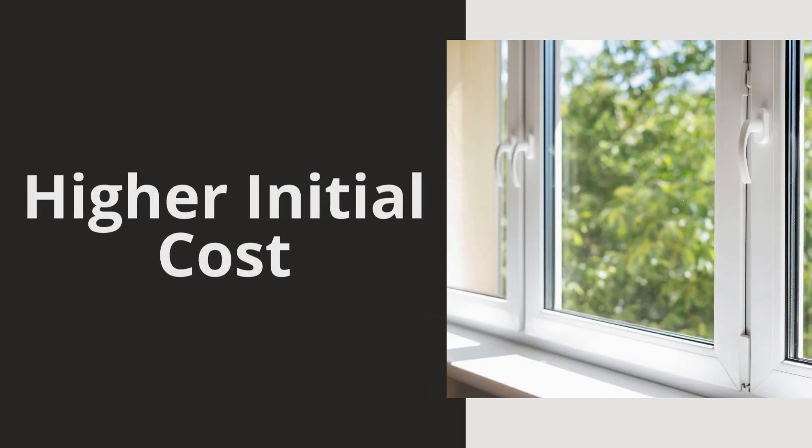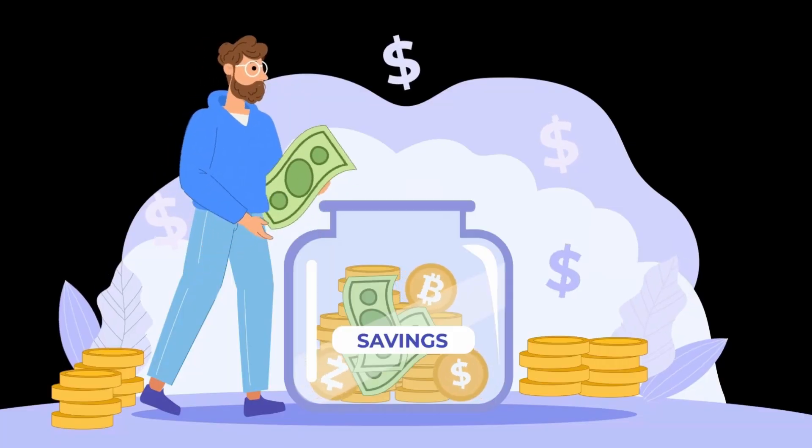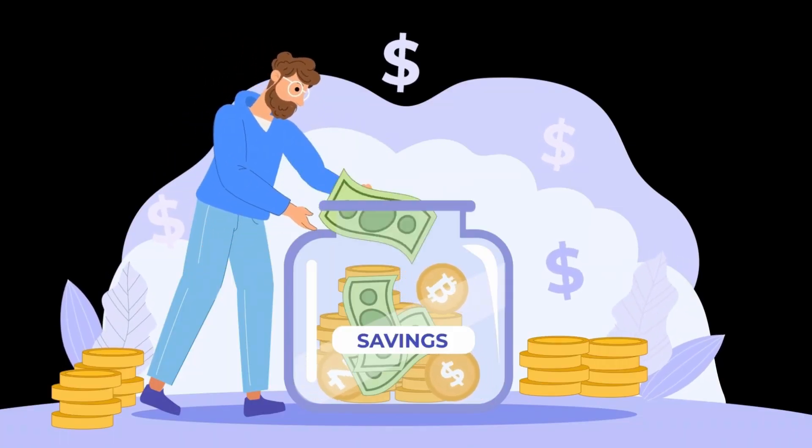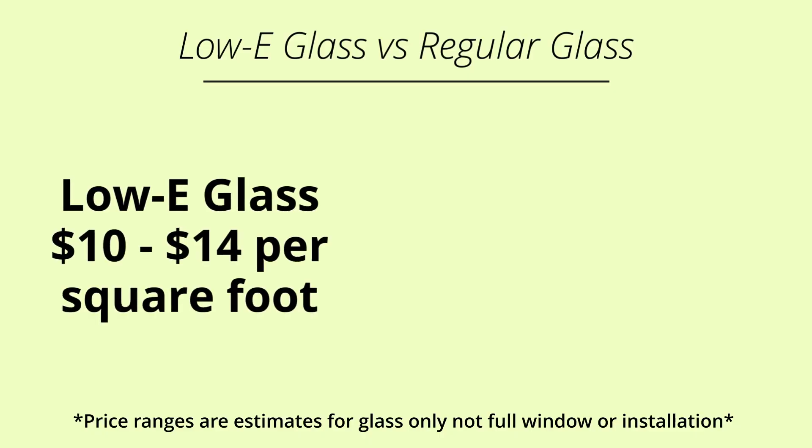First up, let's talk about cost. Low-e glass typically comes with a higher upfront price compared to standard glass. This can be a significant factor if you're on a tight budget. While it's an investment that can pay off over time through energy savings, the initial cost can be a hurdle. On average, low-e glass costs between ten and fourteen dollars per square foot.